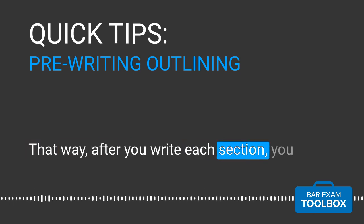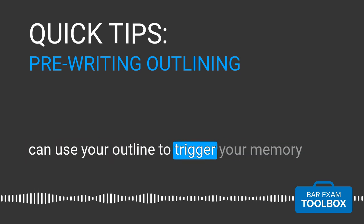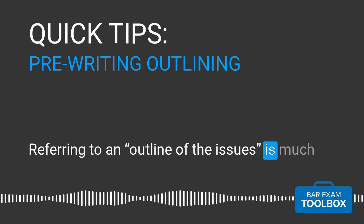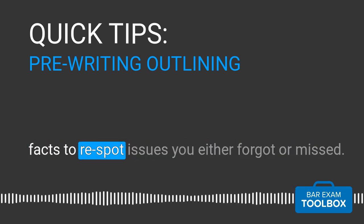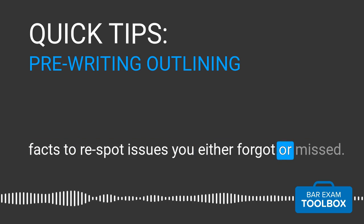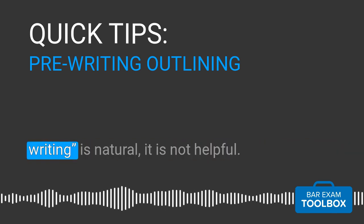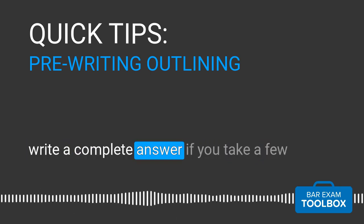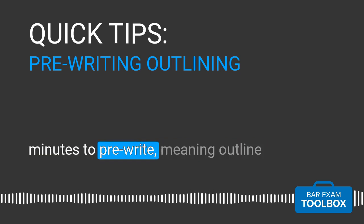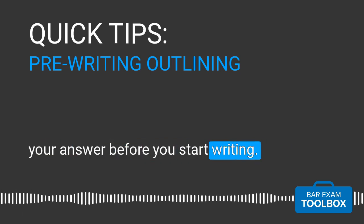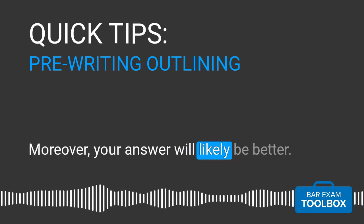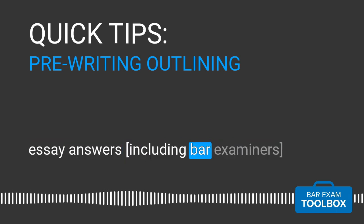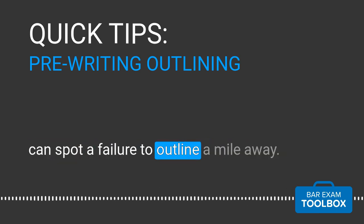That is why taking a few minutes to write out a quick outline of all the issues you want to address is beneficial. That way, after you write each section, you can use your outline to trigger your memory about the other things you must address. Referring to an outline of the issues is much more efficient than coming back through the facts to re-spot issues you either forgot or missed. So while the compulsion to just start writing is natural, it is not helpful. You will likely have more time to write a complete answer if you take a few minutes to pre-write and outline your answer before you start writing.